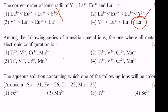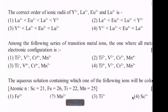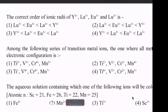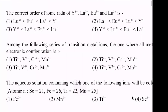In the two units, there are questions like this. How do we solve these questions? The correct order of ionic radii of yttrium 3+, lanthanum 3+, europium 3+, and praseodymium 3+.